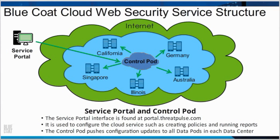The service portal interface is found at portal.threatpulse.com. It is used to configure the cloud service, such as creating policies and running reports. The control pod pushes configuration updates to all data pods in each data center. There are also two global network operations centers staffed 24 by 7 overseeing the Bluecoat infrastructure.